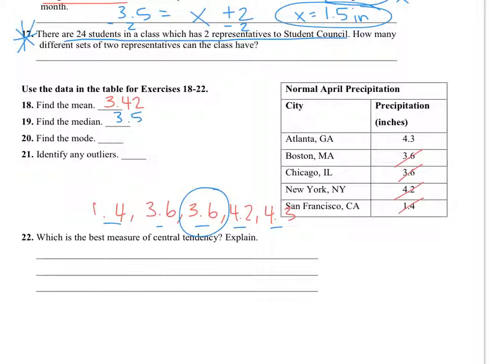The mode, or 3.6, I said 3 point, I circled 3.6, but I wrote 3.5. The mode is the number that occurs most often. So if you look, there's two 3.6s, so that's the mode.